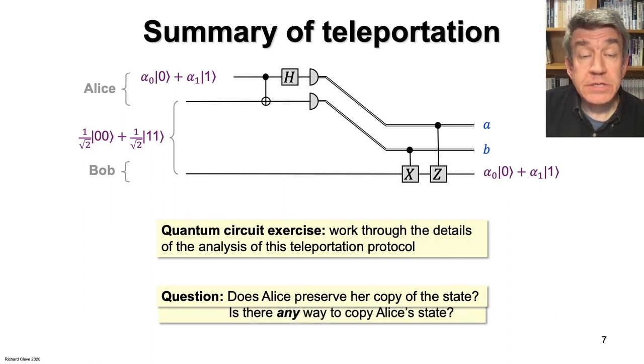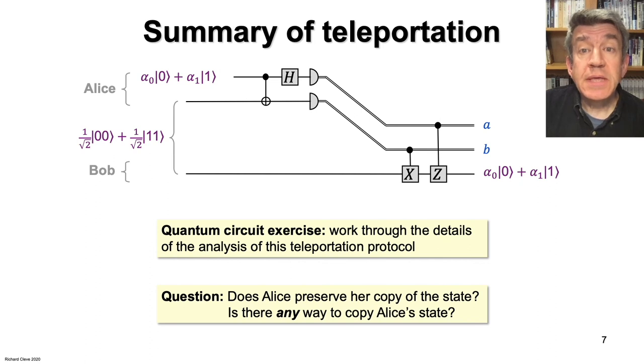Another question is, is there any way to get the second copy of Alice's state? Maybe the teleportation can be modified so that Alice doesn't lose her copy of the state. Or perhaps there's an altogether different way of getting two copies of a state. What do you think? Next, we'll explore this question of copying quantum states.